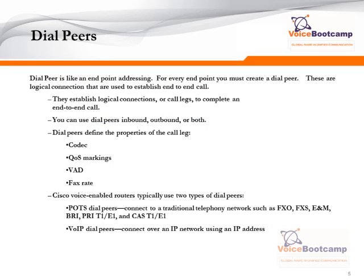A dial peer is like an endpoint addressing. For every endpoint, you must create a dial peer, whether it is an FXS, ePhone DN, or FXO. These are logical connections used to establish an end-to-end call. They establish a logical connection, known as call legs, to complete an end-to-end call. You can use dial peers for inbound, outbound, and both. Inbound dial peers are required when the call arrives into the router from either a POTS dial peer or from a VoIP dial peer. Outbound calls are required when the call is going out of the router toward a POTS dial peer or toward a VoIP dial peer, or voice network.